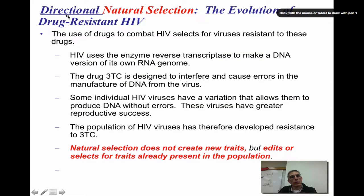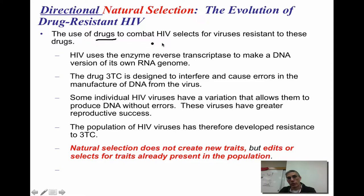We need to talk about something called directional natural selection. A good way to describe this is by looking at the evolution of drug-resistant HIV — the virus that causes AIDS. Over a long period of time, various different drugs have been used to treat HIV. The problem is that when you use these drugs over a long period of time, it tends to select for viruses that are resistant to those drugs, which has been a big problem in trying to find long-term treatments.